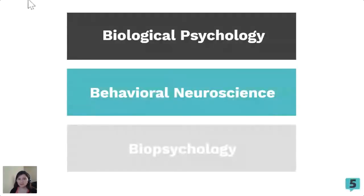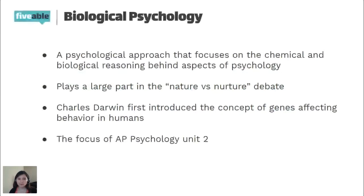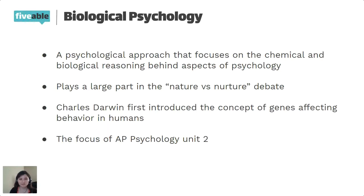Biological psychology goes under a few different names. We're going to be calling it biological psychology, but you may also hear behavioral neuroscience, biopsychology, and there might even be more. It's a psychological approach that focuses on the chemical and biological reasoning behind aspects of psychology. It plays a large part in the nature versus nurture debate. Charles Darwin was the first person who introduced the concept of genes affecting behavior in humans — survival of the fittest. Biological psychology is ultimately a key focus of AP Psychology Unit 2.